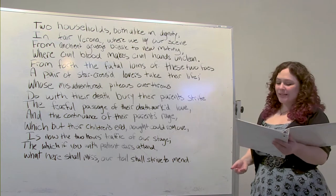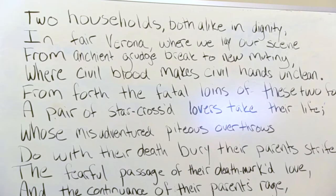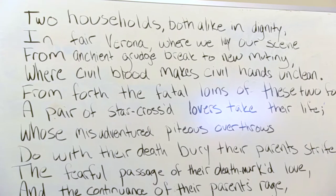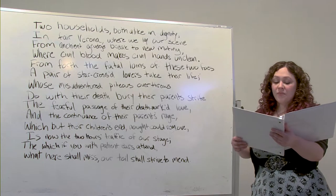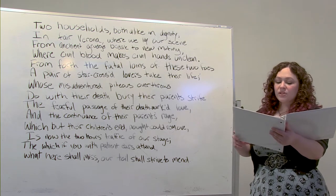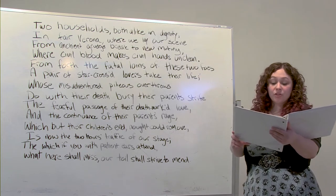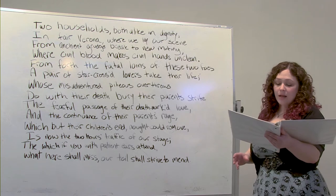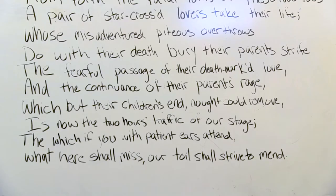Two households, both alike in dignity, in fair Verona where we lay our scene, from ancient grudge break to new mutiny, where civil blood makes civil hands unclean. From forth the fatal loins of these two foes, a pair of star-crossed lovers take their life, whose misadventures, piteous overthrows, do with their death bury their parents' strife. The fearful passage of their death-marked love, and the continuance of their parents' rage, which but their children's end not could remove, is now the two hours' traffic of our stage. The which, if you with patient ears attend, what here shall miss, our toil shall strive to mend.